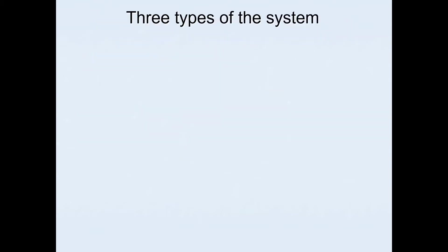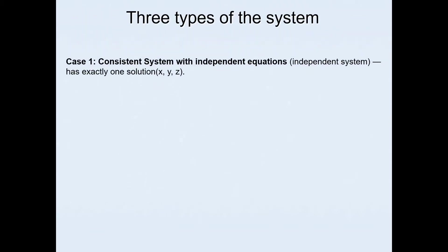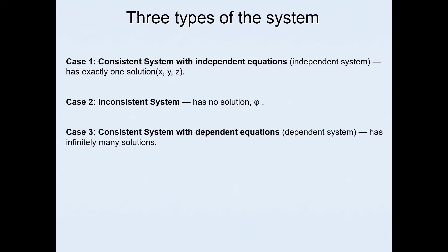There will be three types of systems that you'll be investigating this year. Case 1 is a consistent system with independent equations — this is easy to solve and you will always end up with exactly one solution. Case 2 is an inconsistent system with no solution. Case 3 is a consistent system with dependent equations, which leads to multiple solutions.